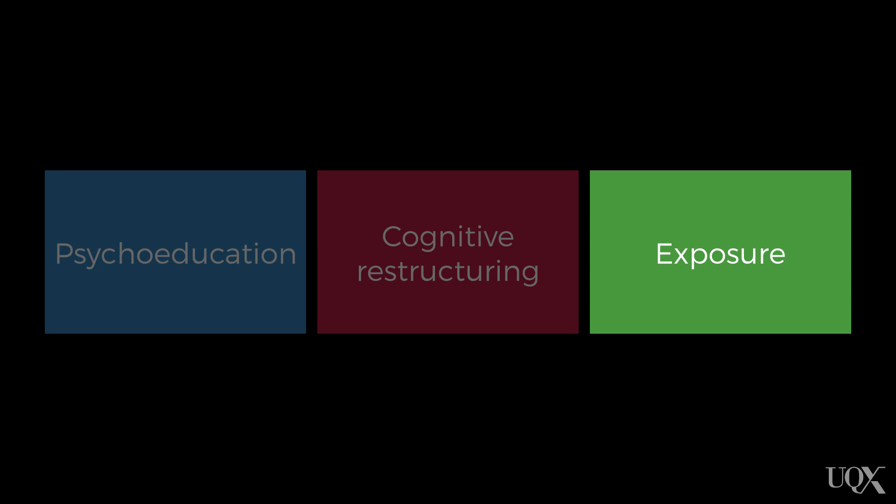The behavioural strategy of systematic desensitisation or exposure aims to address the avoidance of feared stimuli that tends to go hand-in-hand with anxiety. Cognitive restructuring is often, though not always, used in conjunction with exposure. This strategy is based on the psychological principle of habituation and involves deliberately and repeatedly placing yourself in anxiety-provoking situations that would normally be avoided.